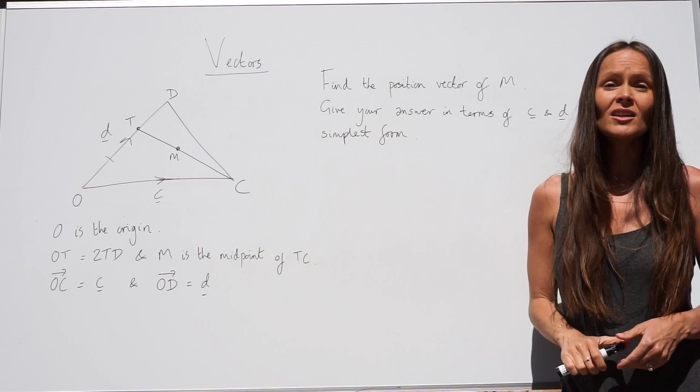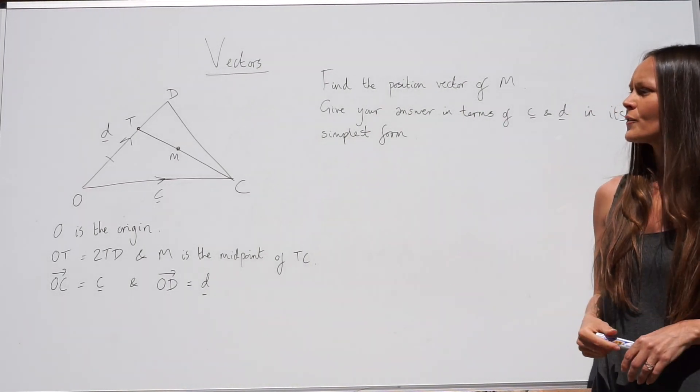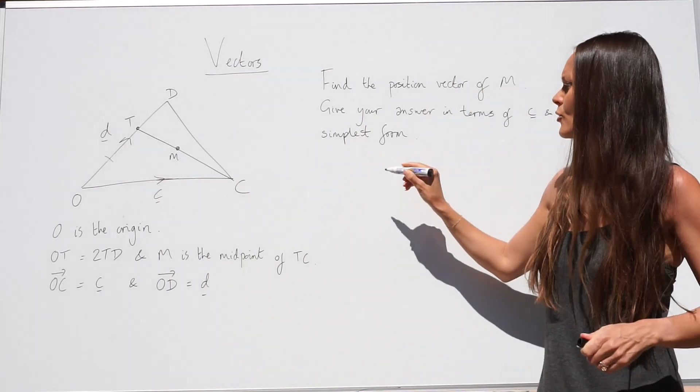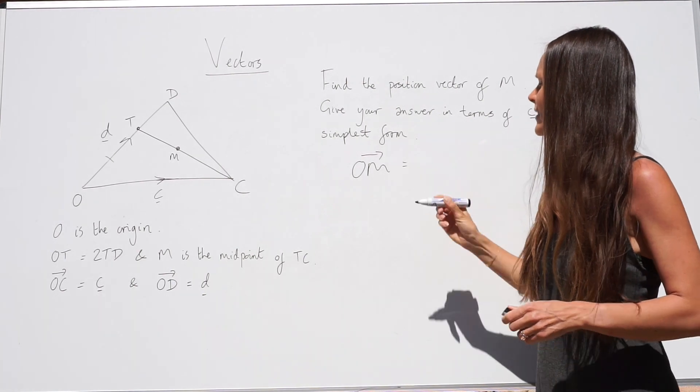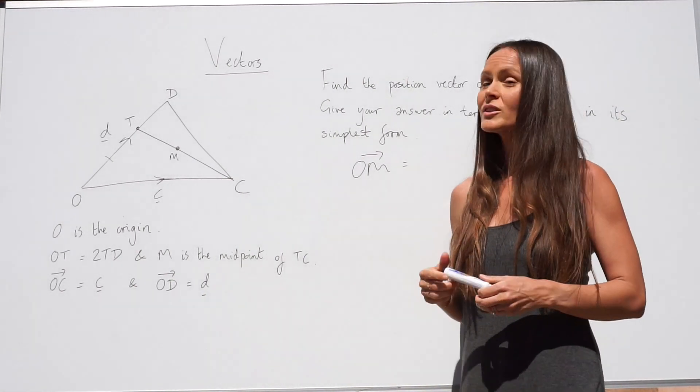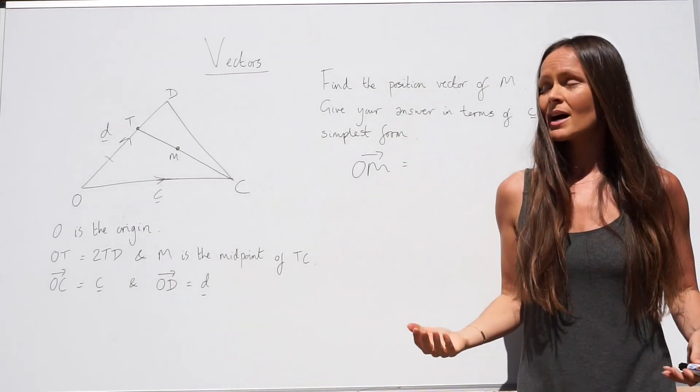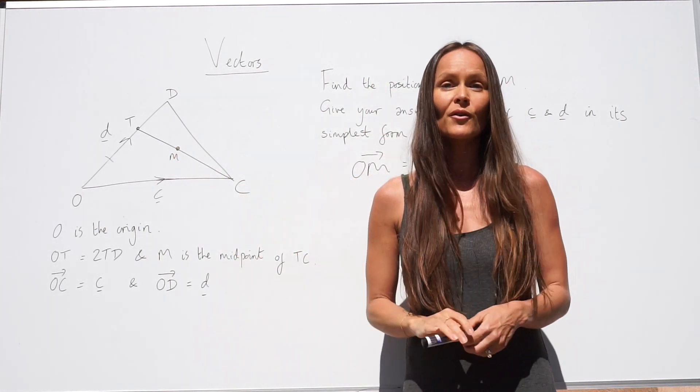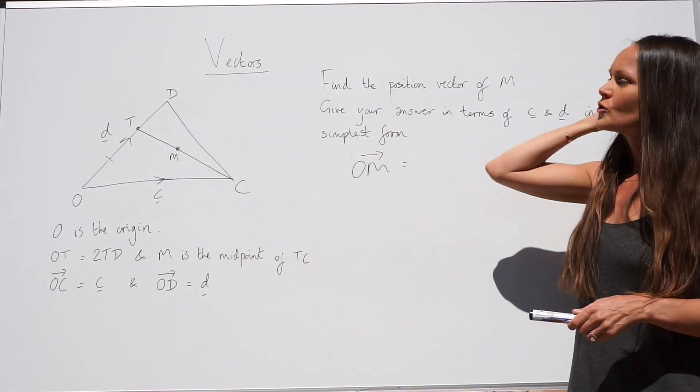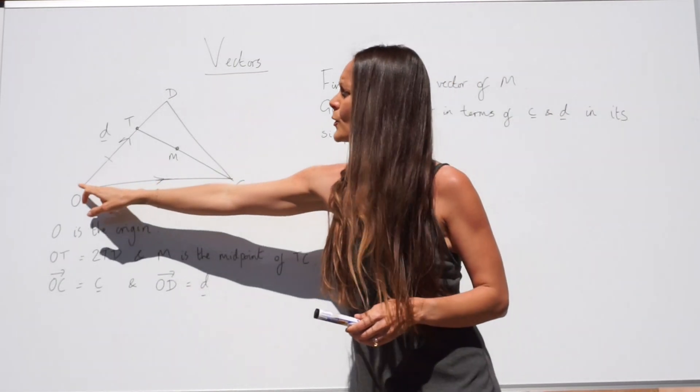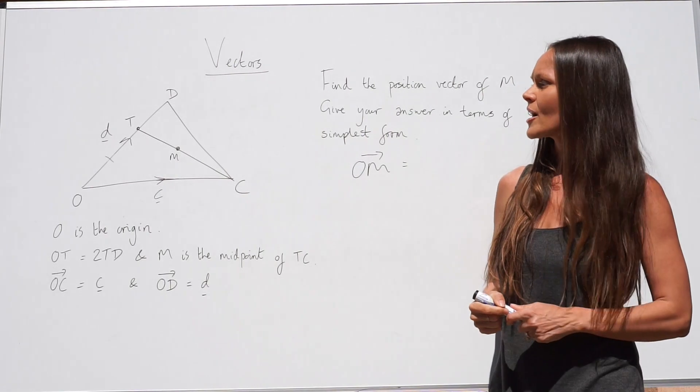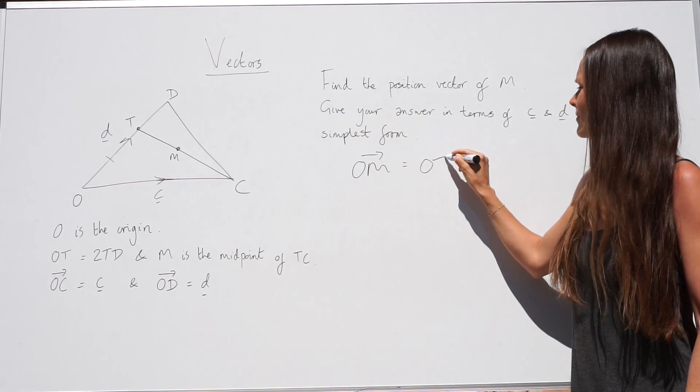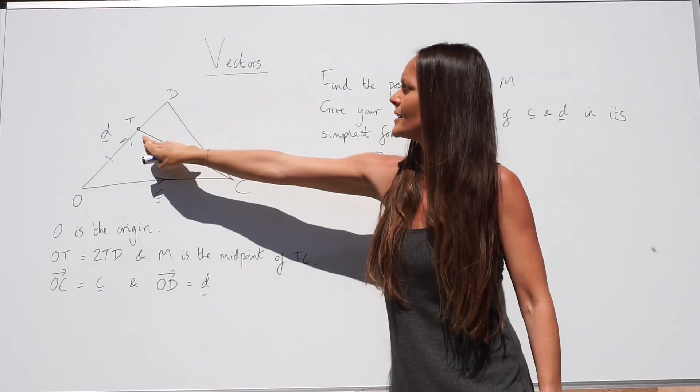So we have to find the position vector of M. Now, the position vector of M just means from the origin to M. O is the origin, so we're working out OM. Firstly, you need to decide what direction you're going to take to get to M. Now, it doesn't matter whether you travel this way or this way. As long as you simplify your answer, you should get the same thing. I'm going to travel via T, so this way. So I'm going to start by travelling along OT and then finally from T to M.